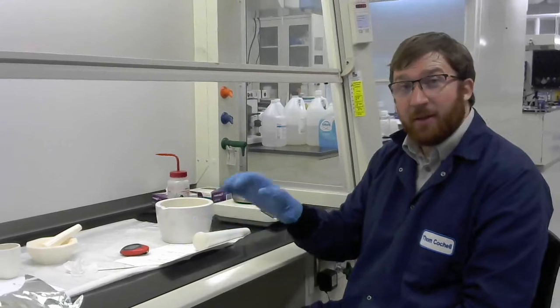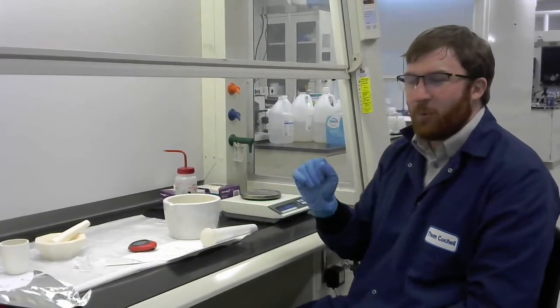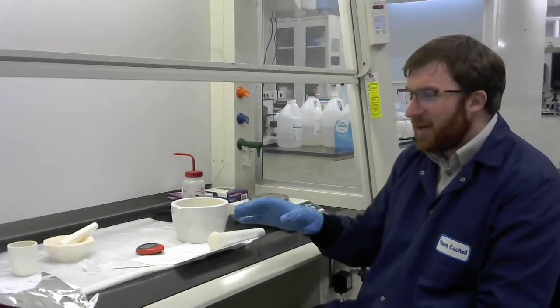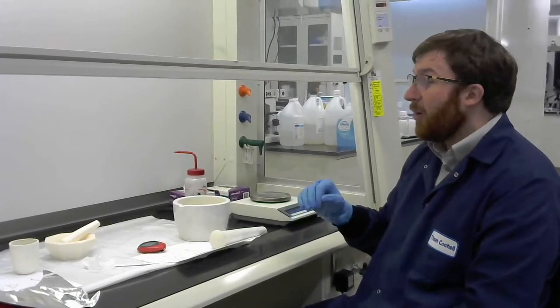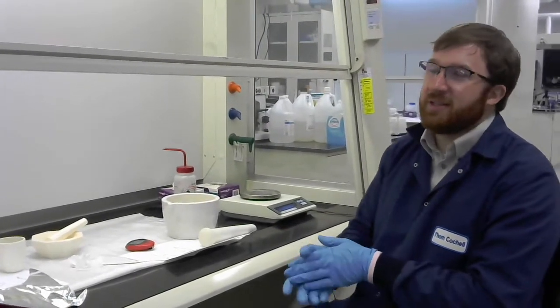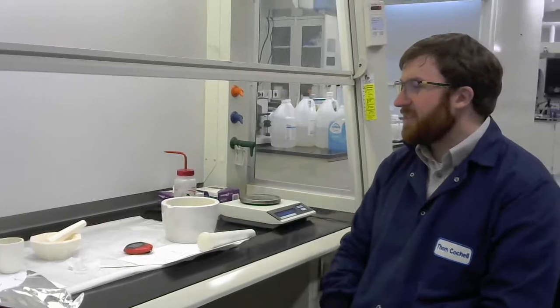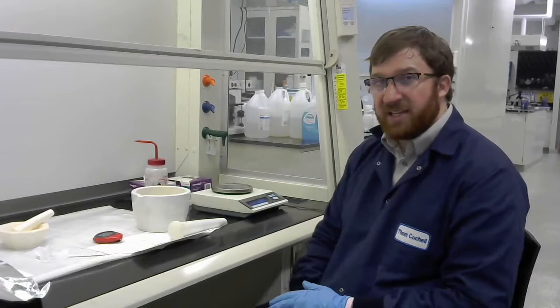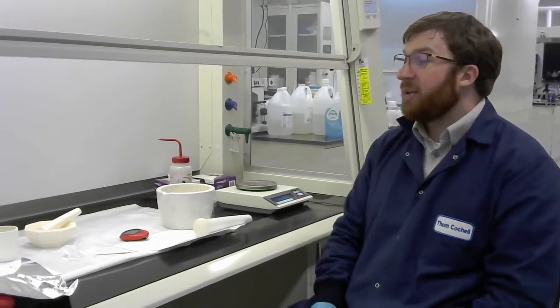Alright, we are back. We have our calcined powder out of the furnace. We weighed it in the last video and now what we're going to do is get to the fun part which is the milling or grinding step. This is going to look very familiar to the milling that we did before we calcined the powder. It's very similar, only the state of the powder is different now.